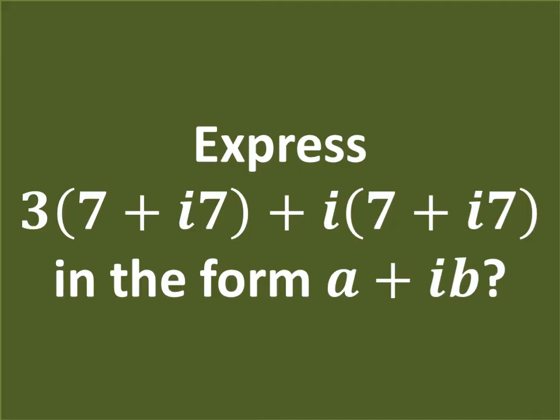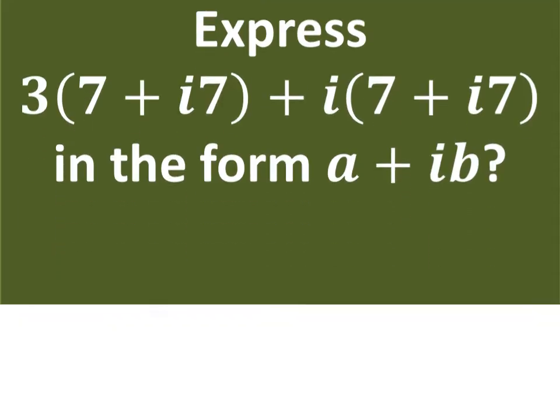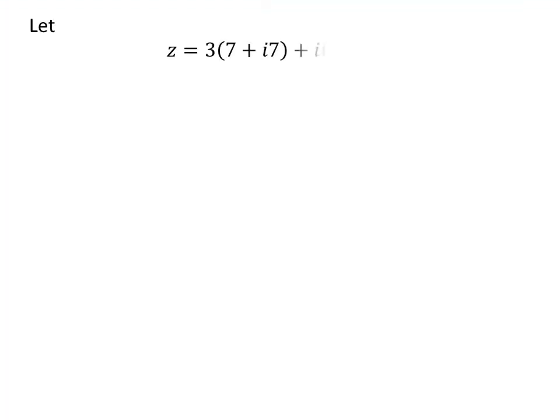Here, i is the imaginary unit. Let us assume z be equal to 3(7 + i7) + i(7 + i7).